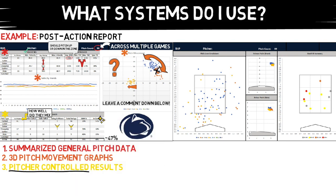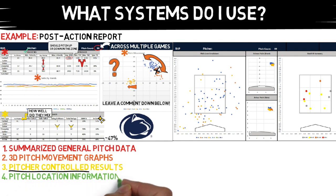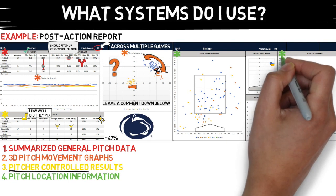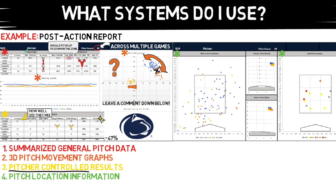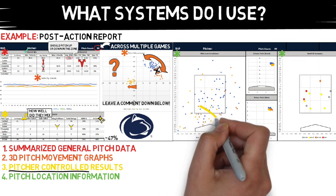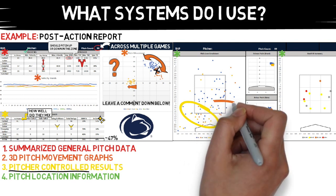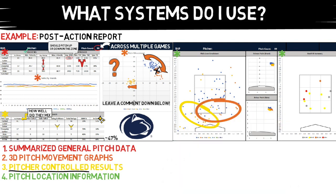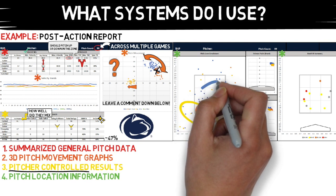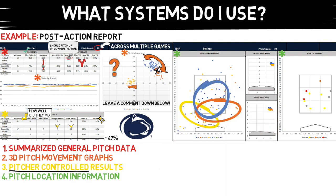Next is just going to be our pitch locations chart. This is also pretty straightforward but can tell you a lot about a pitcher's outing. For example, you can see that this athlete threw the majority of his sliders low and on his glove side, mostly out of the zone. His changeup was mostly low and arm side, and his fastball was in the zone pretty consistently.